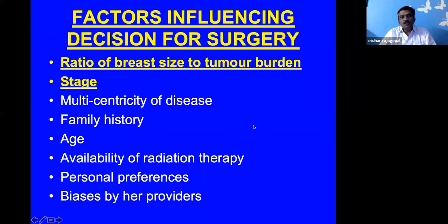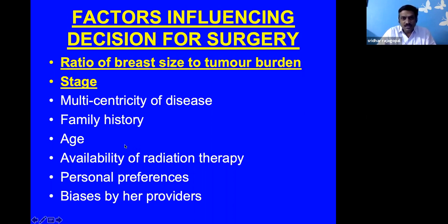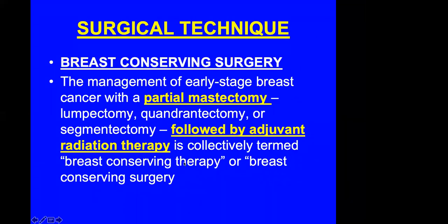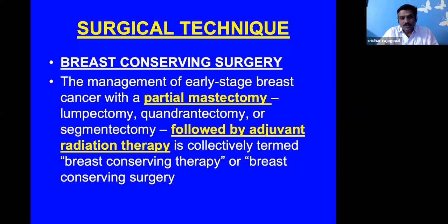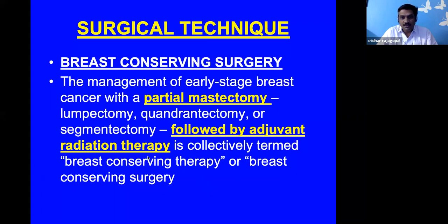Factors influencing the decision for surgery include breast size relative to tumor burden and stage of disease. Multicentricity, family history, and age at diagnosis are also important. Now we come to the topic proper — breast conserving surgery. Understanding the basics helps apply plastic surgery principles better.